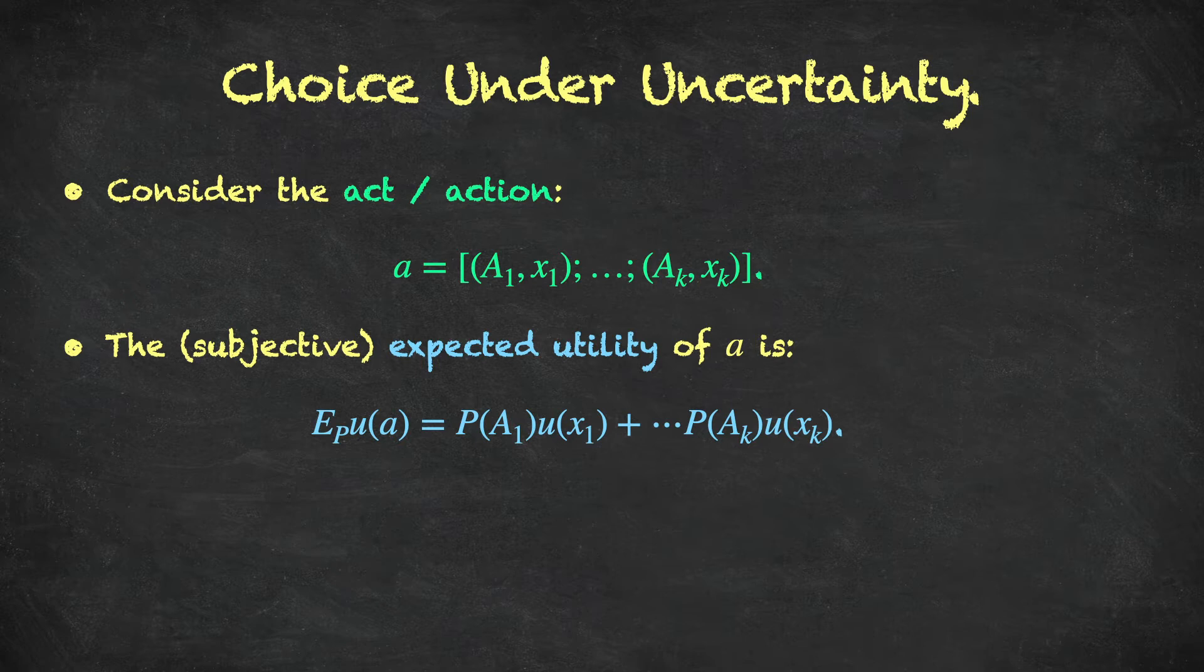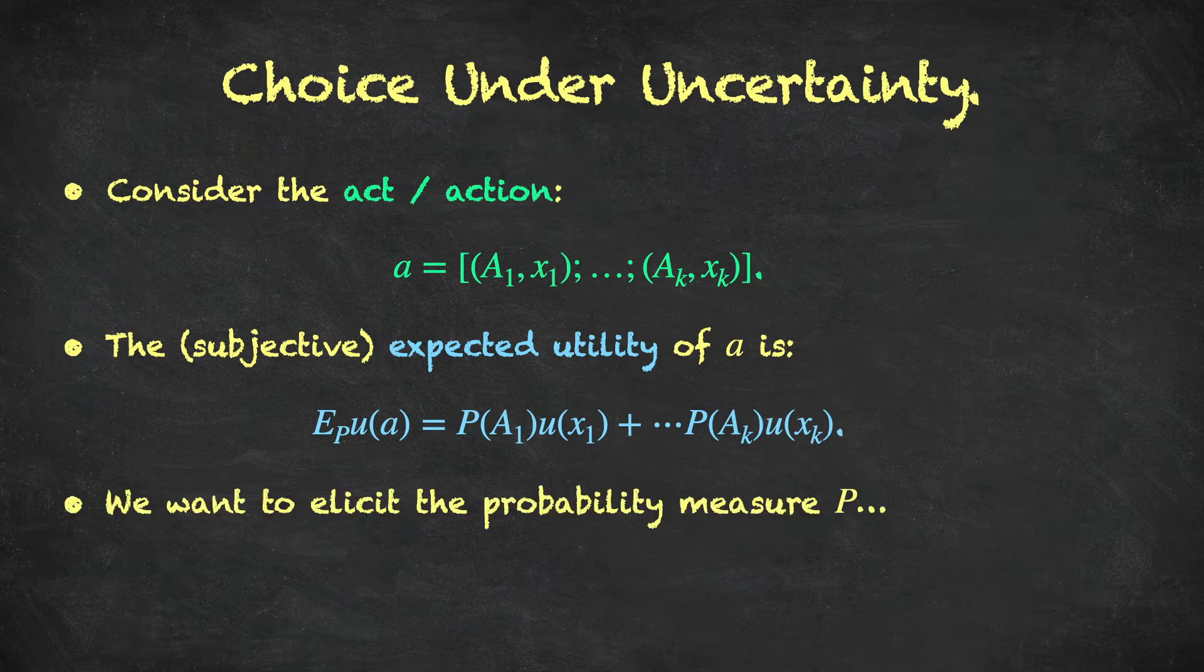which gives the subjective expected utility of the act. So when it comes to choice under uncertainty, subjective expected utility, there are two main ingredients: the von Neumann-Morgenstern utility function, little u, which we've seen how to elicit using various techniques, and then this subjective probability measure, capital P. So suppose we want to elicit this probability measure, P.